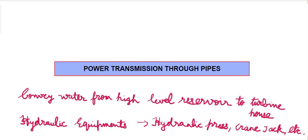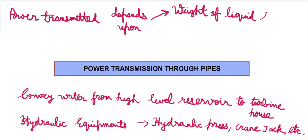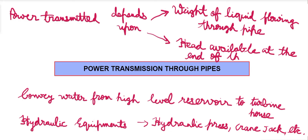The power that is transmitted will depend upon two things: one is the weight of the liquid which is flowing through the pipe, and the other is the total head that is available at the end of the pipe.